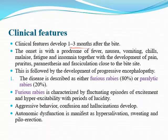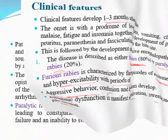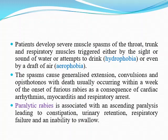There are two clinical scenarios: 80% will present with furious rabies, and 20% with paralytic rabies. In furious rabies, it is characterized by fluctuating episodes of excitement, hyperexcitability with periods of lucidity, aggressive behavior, confusion, and hallucination. The patient presents with acute psychosis associated with autonomic dysfunction, hypersalivation, sweating, and piloerection. Patients develop severe muscle spasm in the throat, trunk, and respiratory muscles, triggered by sight or sound of water — hydrophobia — or even a draft of air — aerophobia.